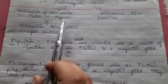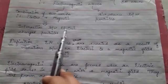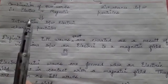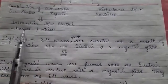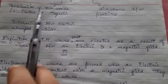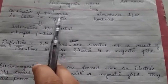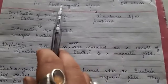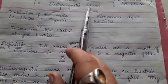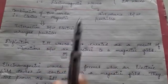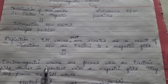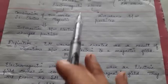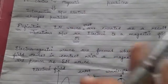Electromagnetic means the interaction between electrically charged particles. This interaction is known as an electromagnetic wave, which means a disturbance between particles. Combining these two words, electromagnetic waves are those created when vibration is produced between the electric and magnetic field. This is the definition.